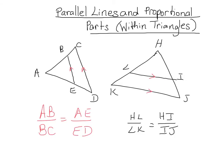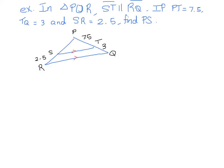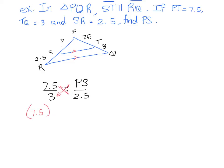Let's take a look at an example. Here we have a triangle and within our triangle we have a line that is parallel to one of the sides. That means that the parallel line is going to chop our triangle into proportional segments. We have that 7.5 over 3 is going to be equal to PS — which we're trying to find — over 2.5. We can go ahead and cross multiply, and on the left side we get that 7.5 times 2.5 is equal to 3 times PS.